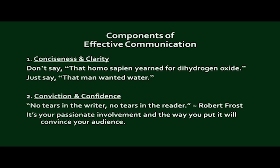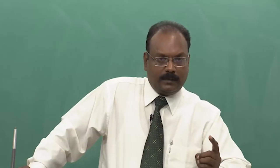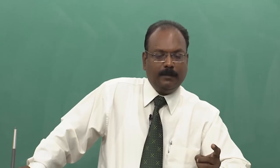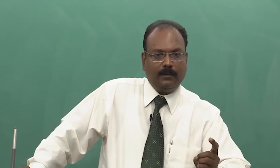What components should you keep in mind to become an effective communicator? This is perhaps the most important part of this lecture. There are five components. The first one is conciseness and clarity — be concise, do not use more words, and be clear and simple. For example, do not say 'homo sapien earned for dihydrogen oxide' when you can just say 'man wanted water.' The second component is conviction and confidence.